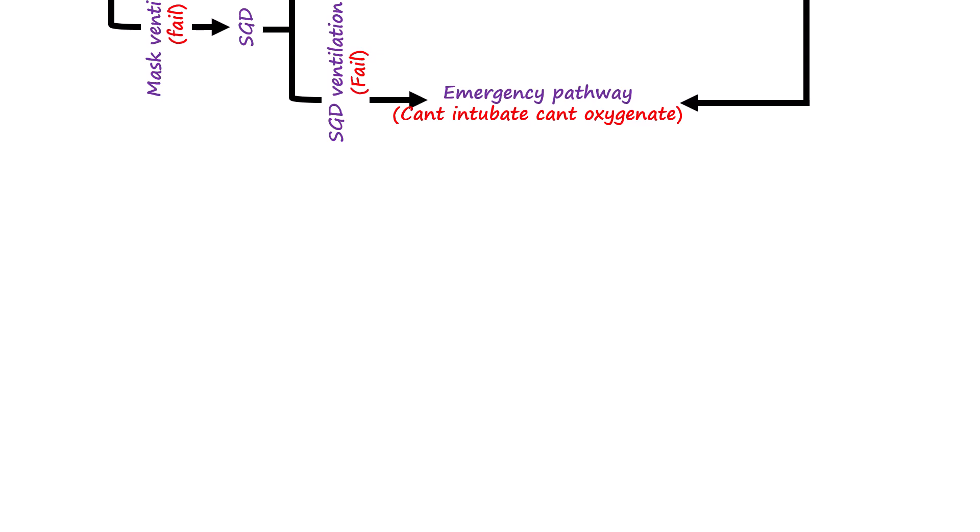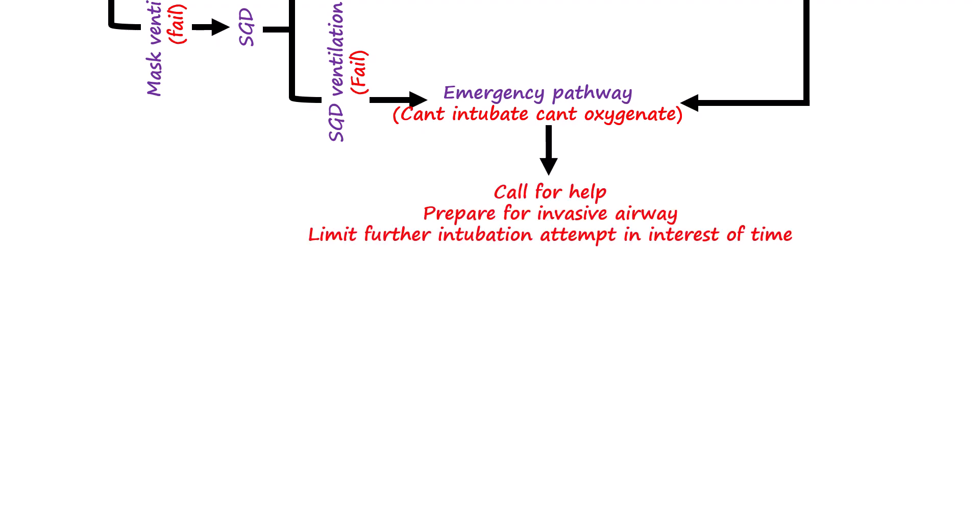The emergency pathway is taken when intubation has failed and ventilation with both face mask and supraglottic airway is also unsuccessful — a situation known as cannot intubate, cannot oxygenate. In this critical scenario, help must be called immediately, as the patient is no longer being ventilated and oxygen reserves will rapidly deplete. Preparation for invasive airway access should begin without delay, using options such as surgical cricothyrotomy, needle cricothyrotomy, or surgical tracheostomy. While preparations are underway, one may attempt further intubation only if optimization strategies are applied, but it is vital to remain aware of the limited time available. Attempts should be kept to a minimum, and if oxygenation is not restored, the clinician must proceed promptly to emergency invasive airway access to prevent hypoxia and cardiac arrest.